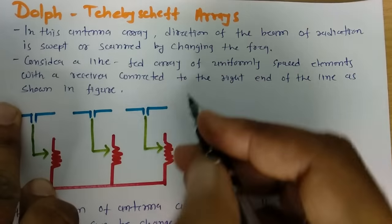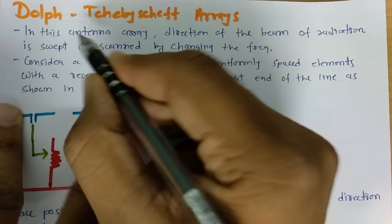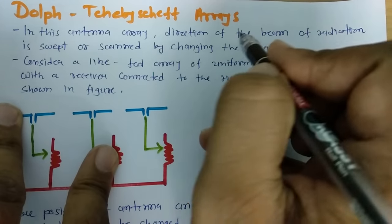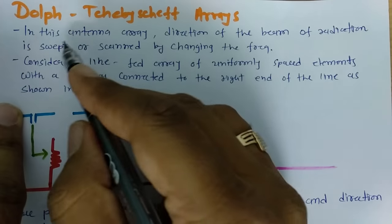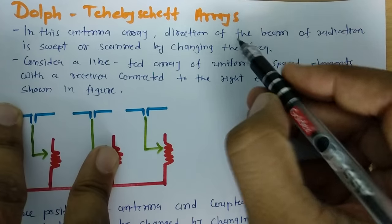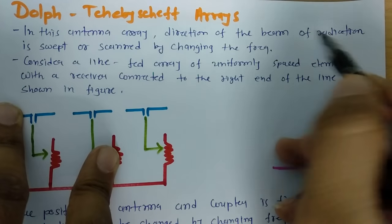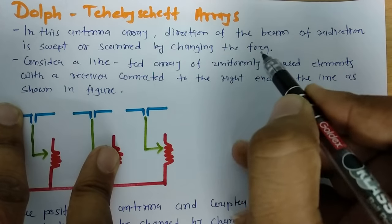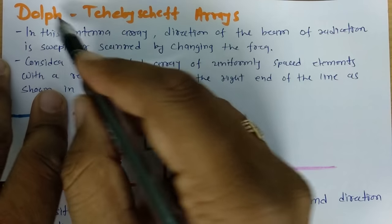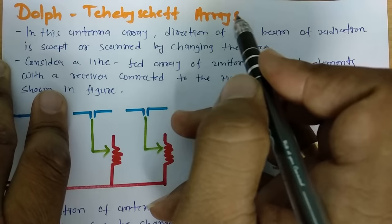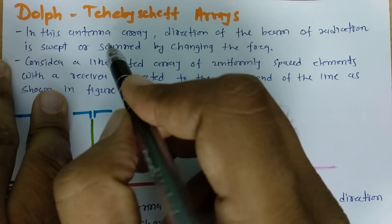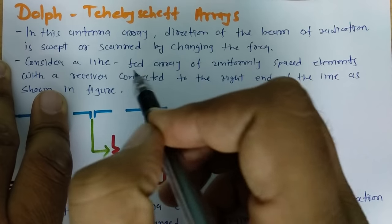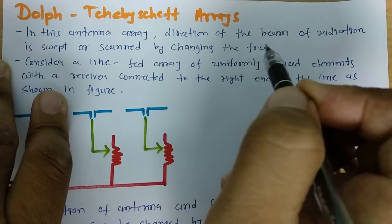Welcome to Antenna and Wave Propagation Playlist. Here, in this session, I will be going to explain you Dolph-Chebyshev Array. In this antenna array, direction of beam of radiation is swept or scanned by changing frequency. By using Dolph-Chebyshev Antenna Array, we can change the direction of antenna beam by changing frequency.